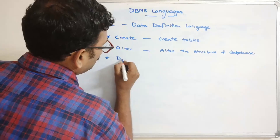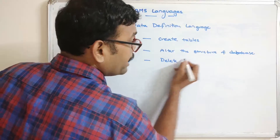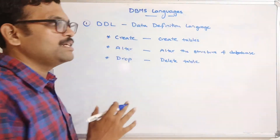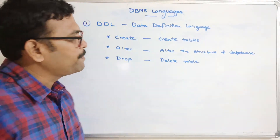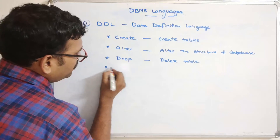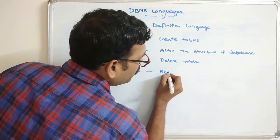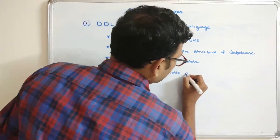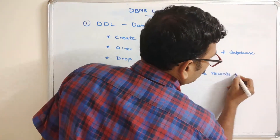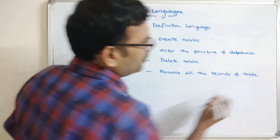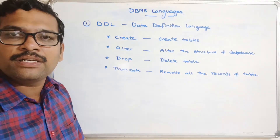Next is DROP — this is used to delete an entire table, not just the data. And TRUNCATE — this is used to remove all the records of a table. All these DDL commands work on the structure and schema of the database, not the data.